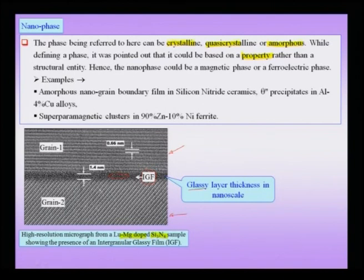This difference is precisely coming because of the nano scale confinement between the two grains — grain one and grain two, which are both crystalline grains of silicon nitride.